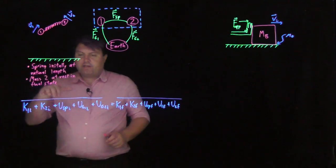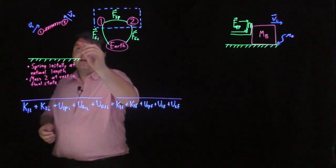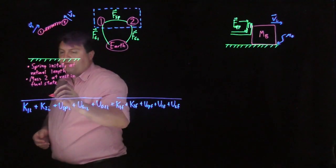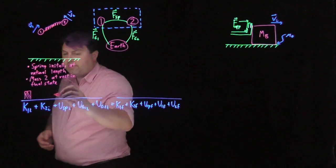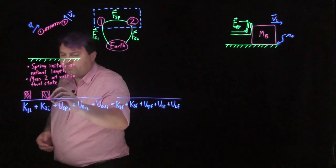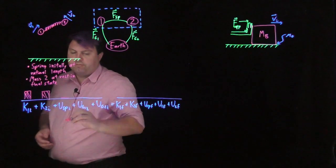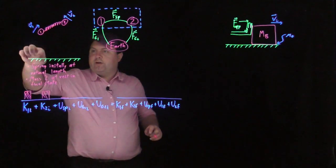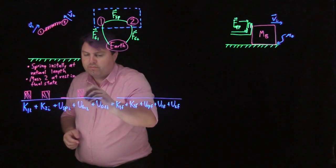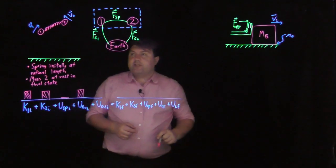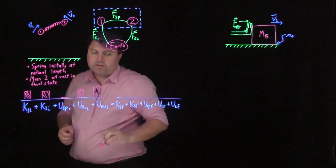And then we can draw bar charts to help us understand what concepts are zero, what concepts are non-zero. Since object one has an initial velocity, we give it some amount of bar chart. Two has some velocity, we give it some amount of bar chart. The spring is initially at its natural length, so we give it zero. And mass one is above the floor, so we'll give it some initial gravitational potential energy. Two also above the floor, so we'll give it some gravitational potential energy.